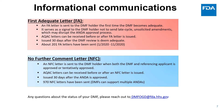Informational communications is probably the best type of communication you will receive, because it means your DMF is now considered adequate. The first type is a first adequate letter. It serves as a signal that your DMF is adequate and that you, the DMF holder, should not send any late cycle unsolicited amendments, which could interfere with your ANDA's approval process. These are usually sent out 30 days after a DMF is considered adequate.